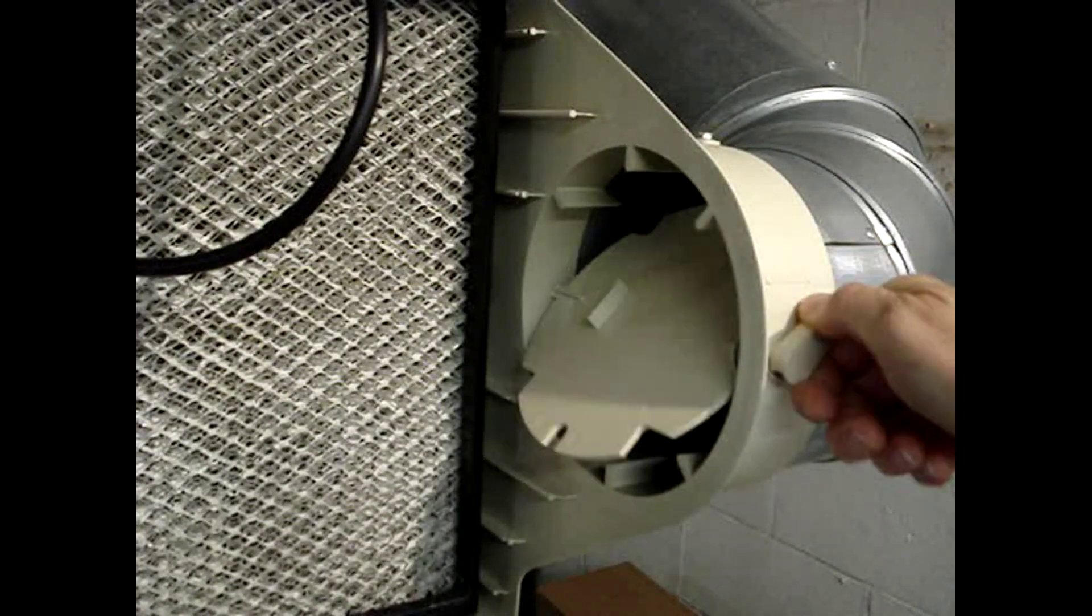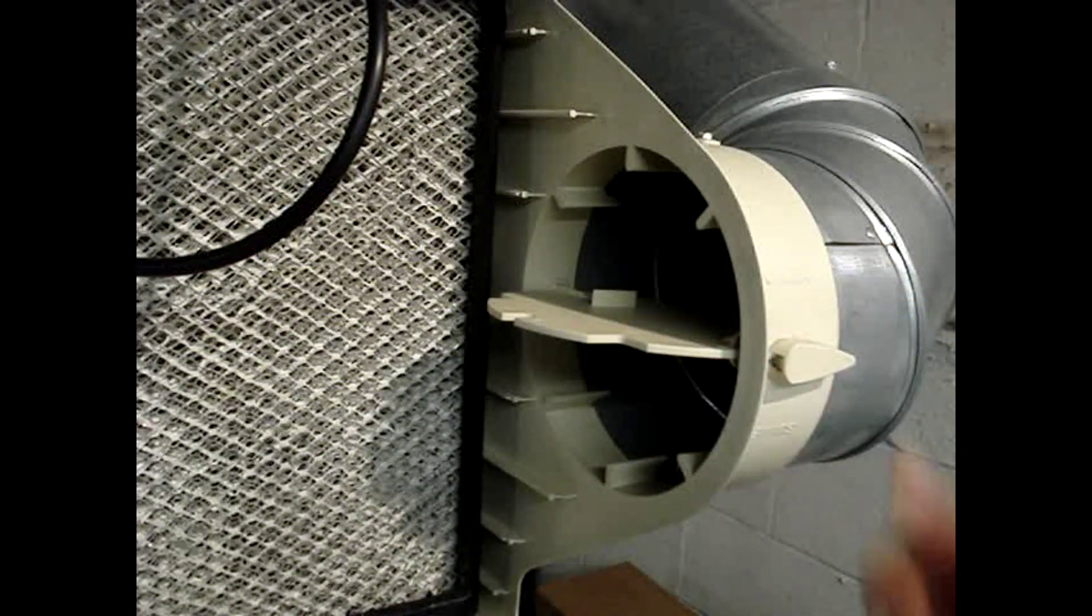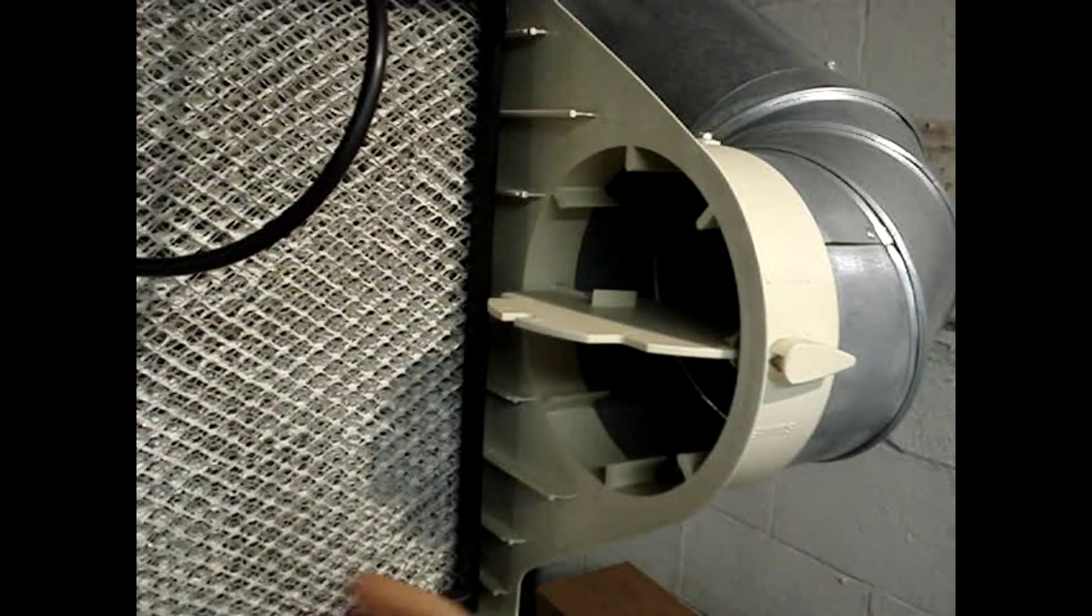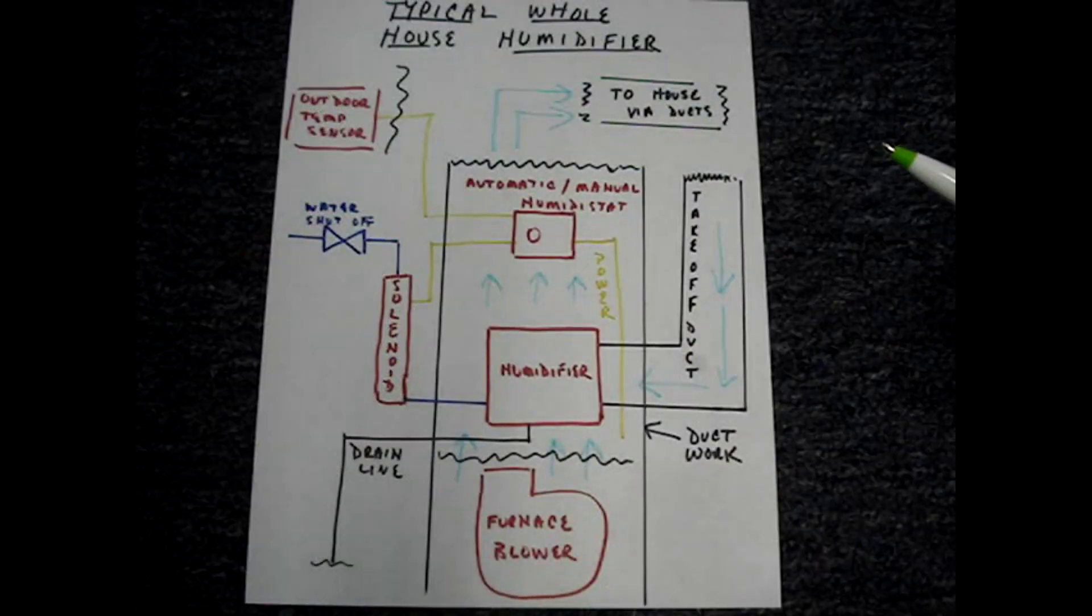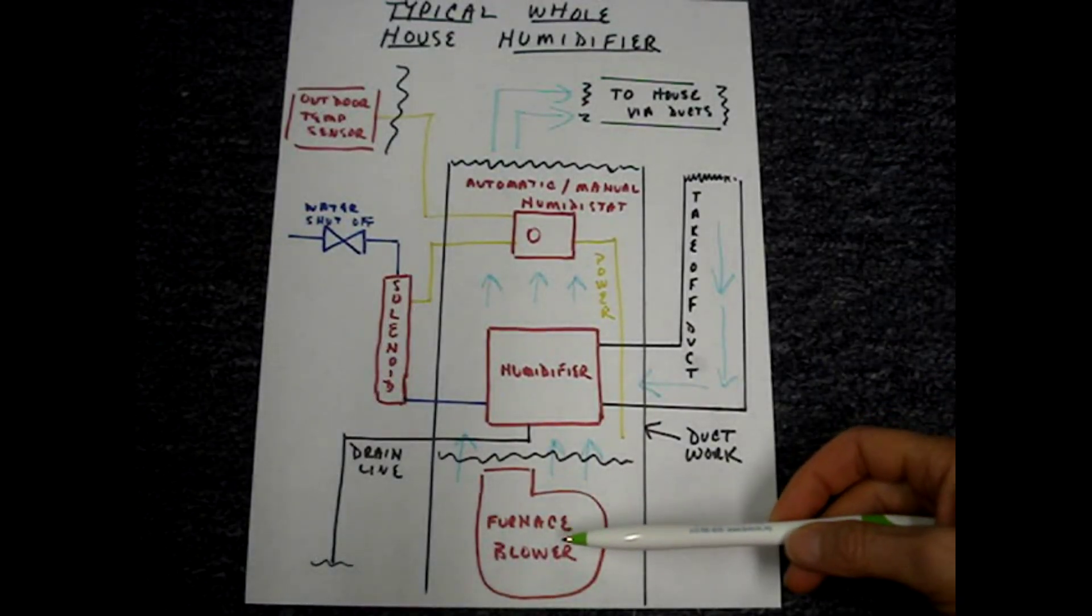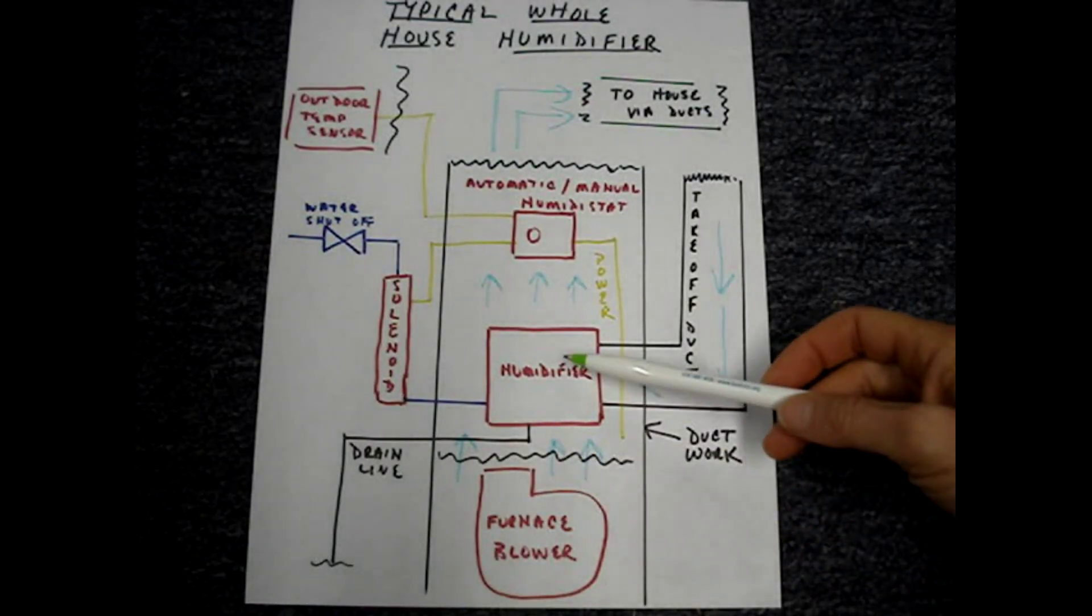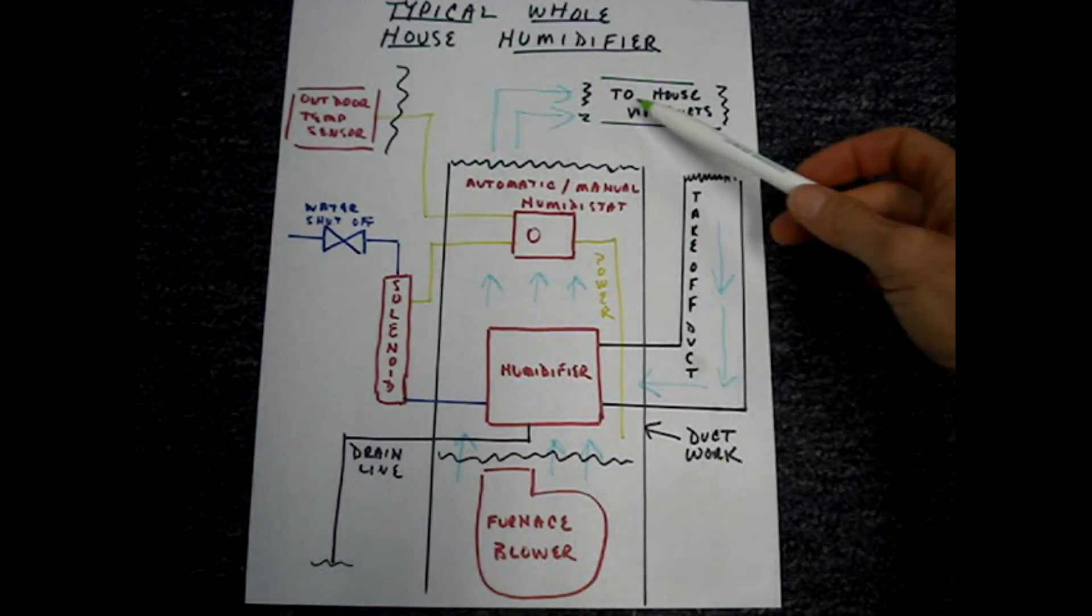And then for the winter months, the damper will be open to allow the air to flow through the evaporator panel. Then the furnace's blower pushes the moist air throughout the house through the ductwork.